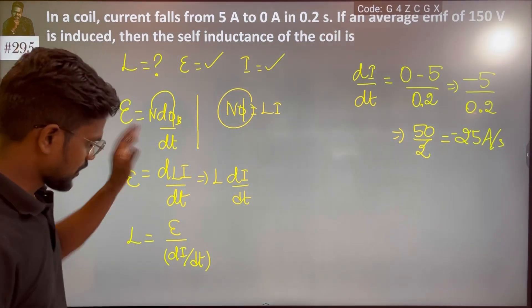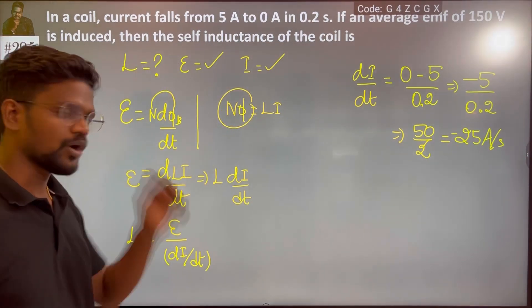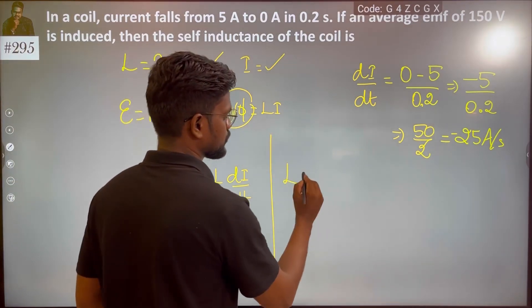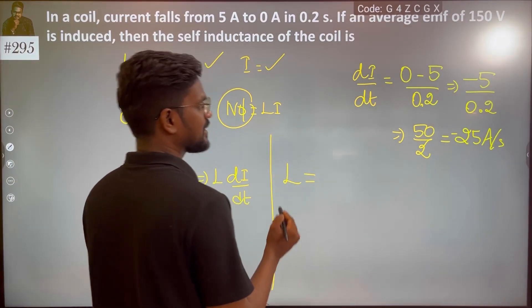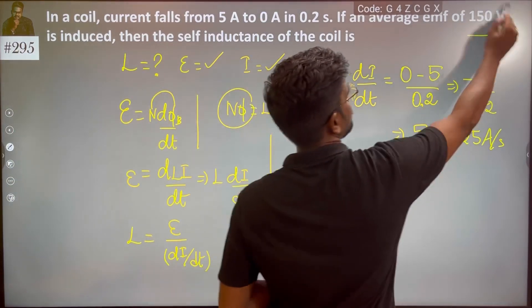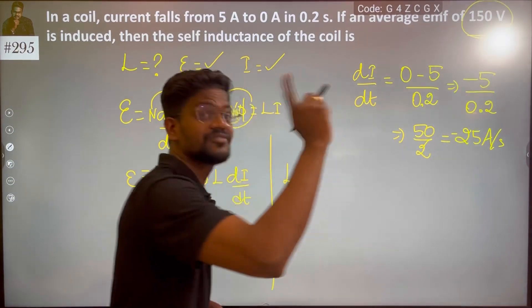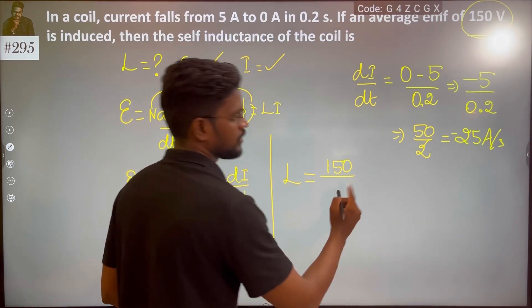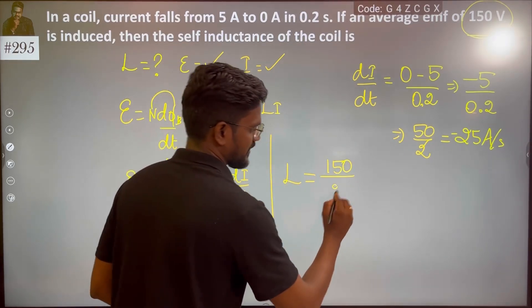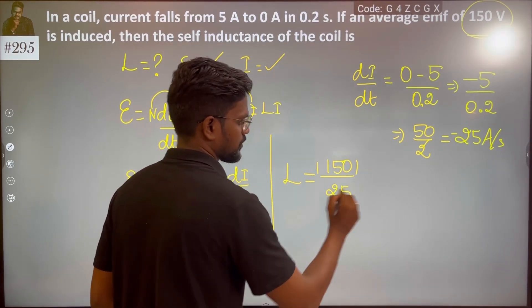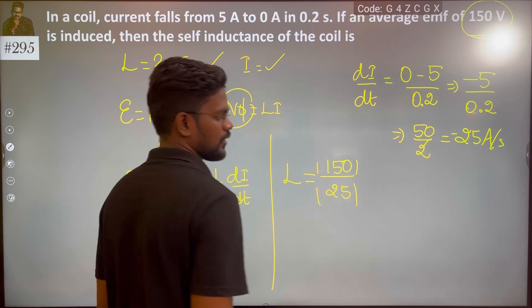In the given question, we always go with the magnitude. So L equals EMF divided by dI/dt, which is 150 divided by 25. That gives us the self-inductance of the coil as 6 Henry.